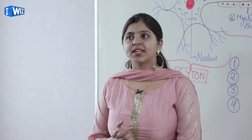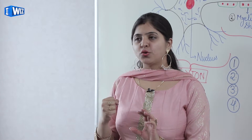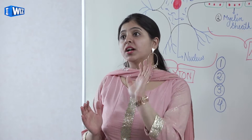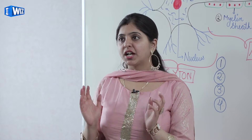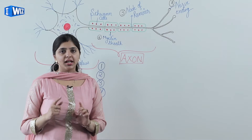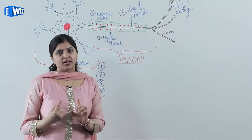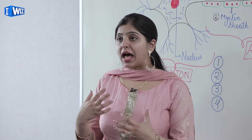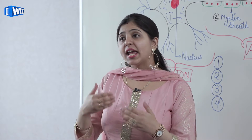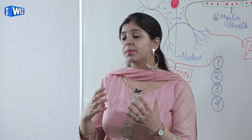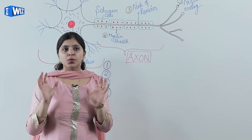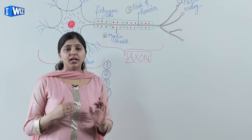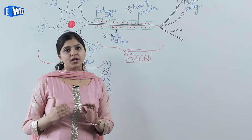First of all, you know what is Control and Coordination? Control means to control every work your body does. And if you talk about Coordination, then you have to coordinate one with another. So, Control and Coordination means how your body, animals, and organs coordinate and control one another. Basically, we are going to learn about animals and how the control and coordination process works.